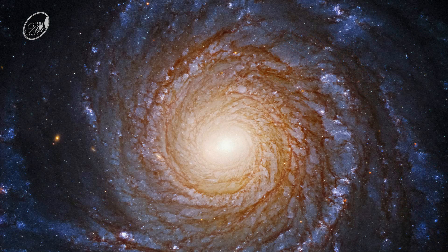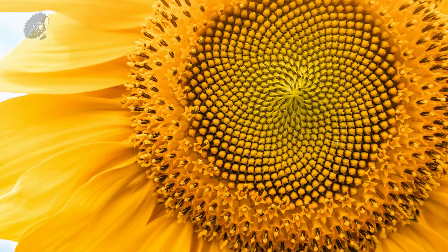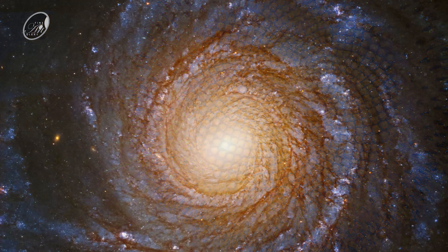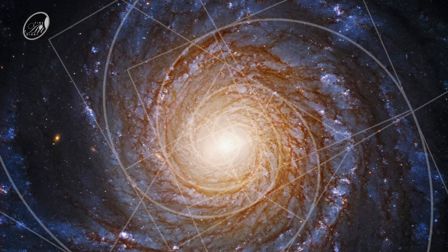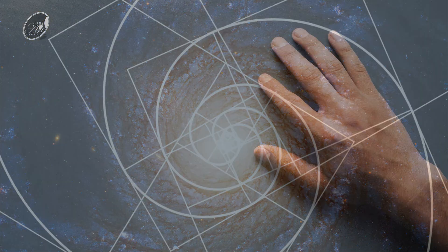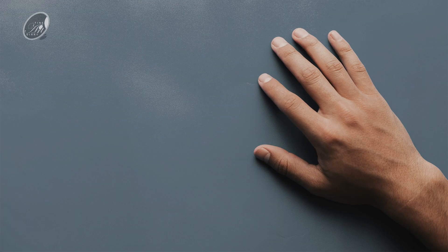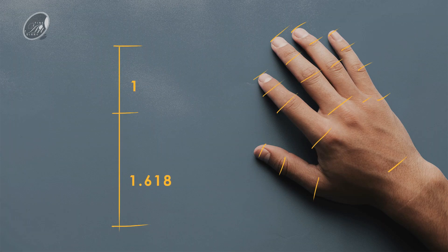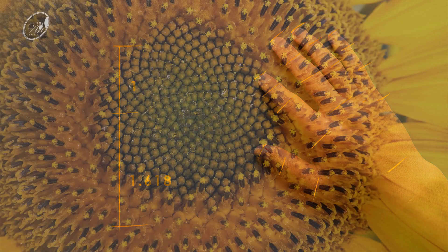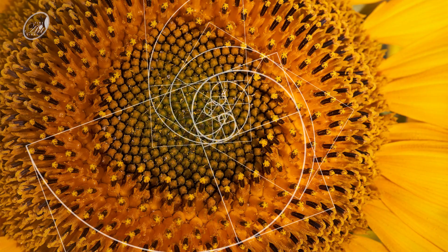Have you ever wondered what the proportional ratio is in the human bones, or in the spiral of galaxies, or in the pattern of seeds in a sunflower? All of these share a fascinating common ratio — that is 1 to 1.618, known as the golden ratio.